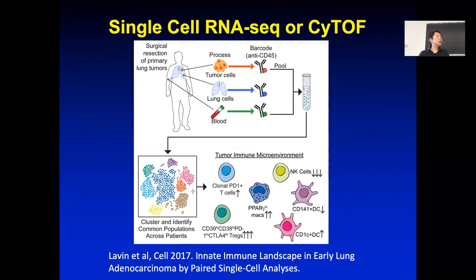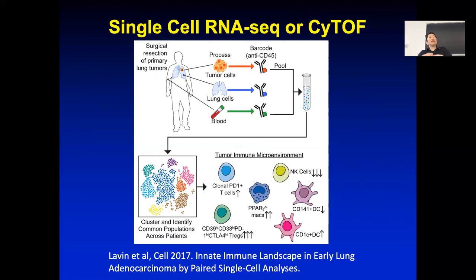There are also neoadjuvant trials — say you have a head and neck cancer. You can first take a little biopsy, do the profile, then treat the patient with one or two doses of immunotherapy. Then go through the real surgery to remove the whole tissue — hopefully those first doses of immunotherapy already start to shrink the tumor. You can then compare expression before and after treatment. For melanoma and head and neck cancers, these are easier; for internal organs, it's harder to get samples.